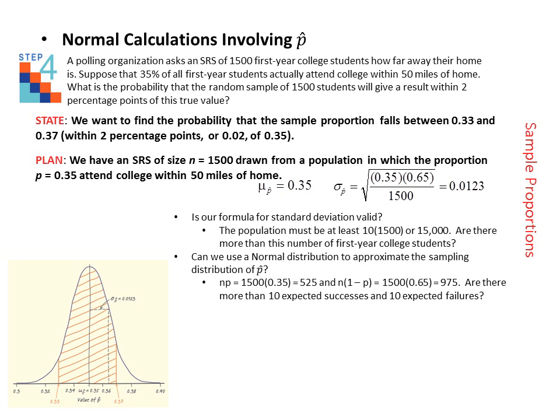Next we need to make sure that we can actually use the normal distribution. So we find the expected number of successes and failures. So our sample size is 1,500. Our population proportion is 0.35. So that means np is 525. And n times 1 minus p is 975. Are both of these greater than or equal to 10? Of course they are. They are both greater than 10. So it is okay to proceed with the normal calculations.